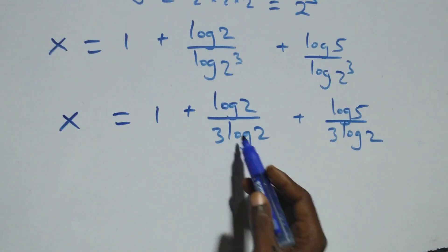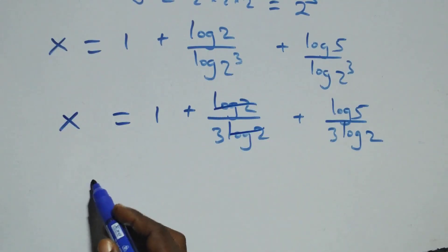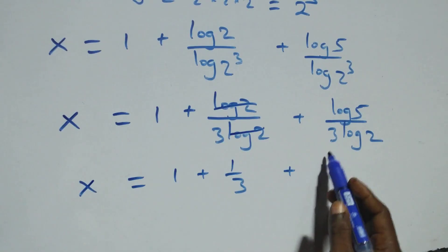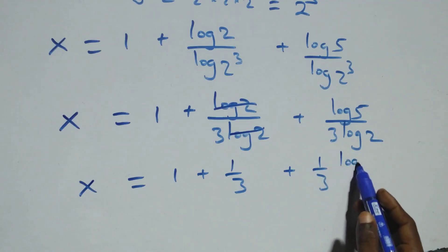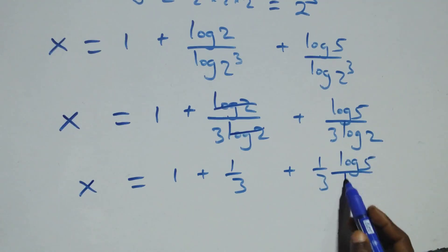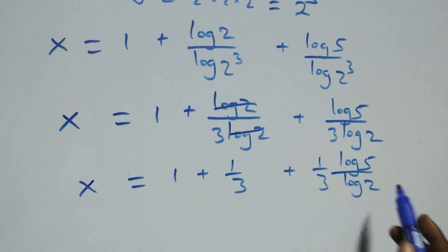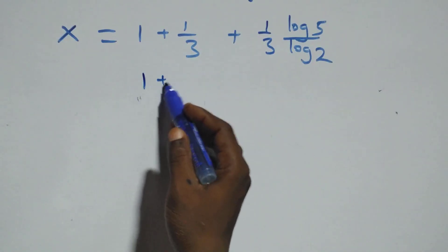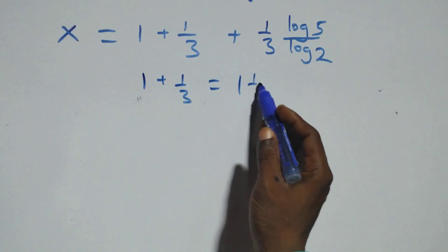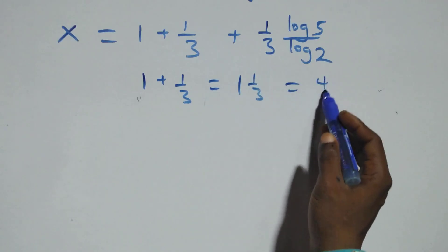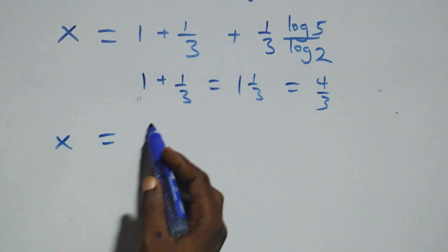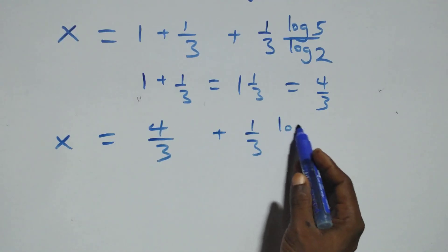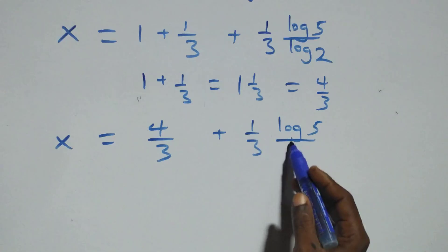Log 2 cancels in the first fraction, giving 1 over 3. So x equals 1 plus 1 over 3 plus 1 over 3 times log 5 over log 2. We rewrite 1 plus 1 over 3 as 4 over 3. All together, x equals 4 over 3 plus 1 over 3 times log 5 over log 2.